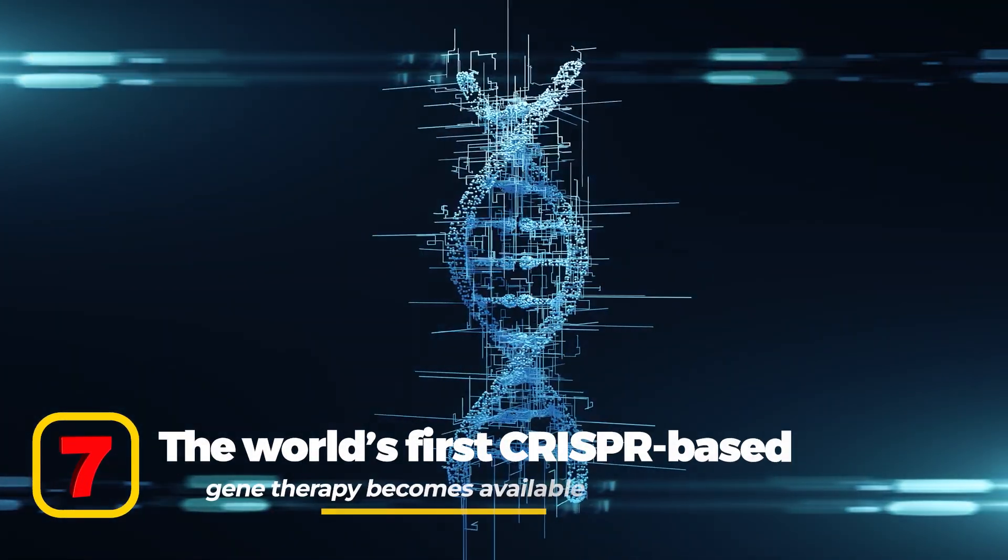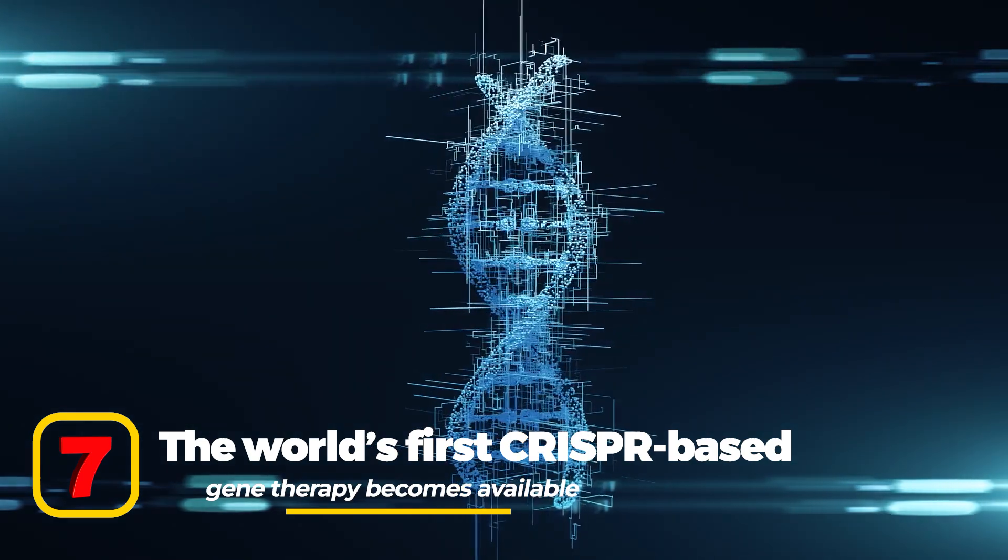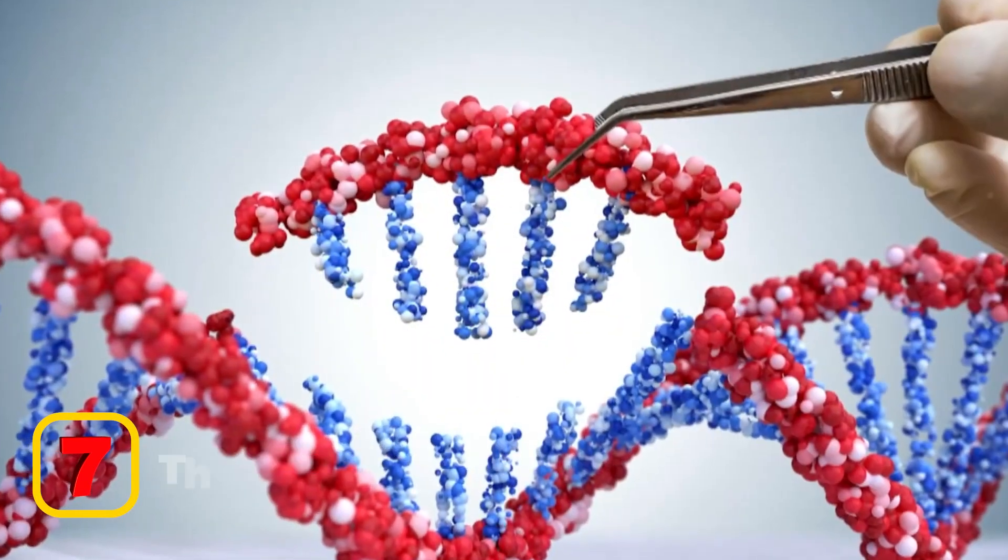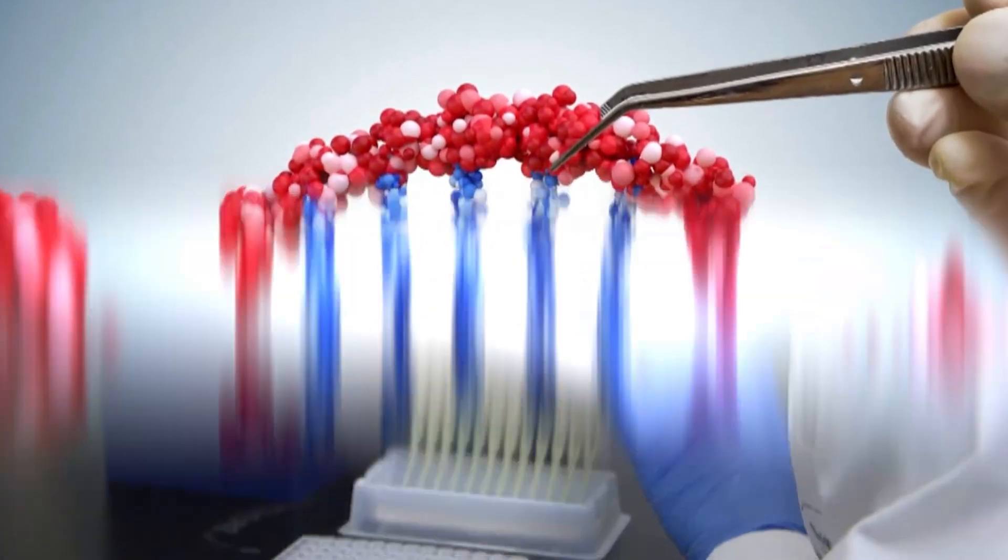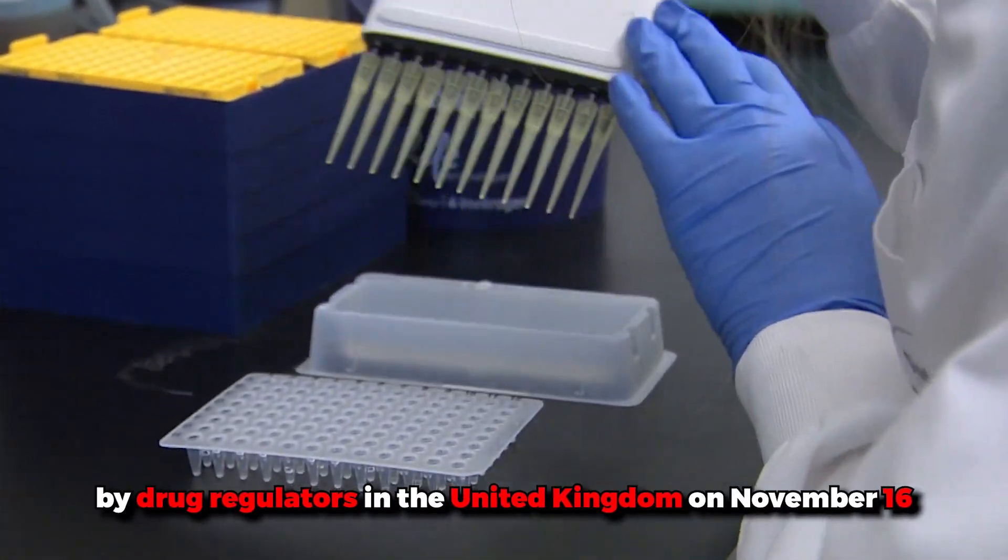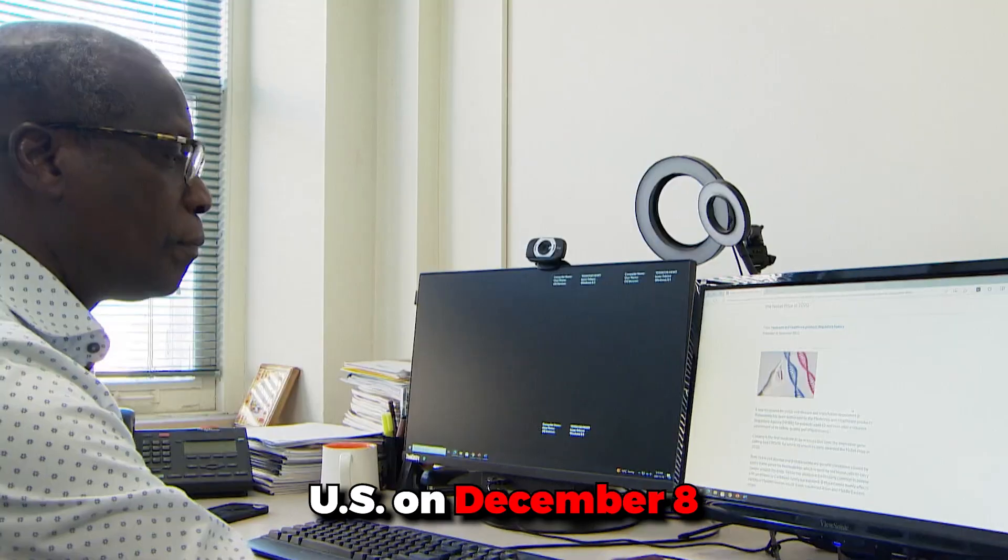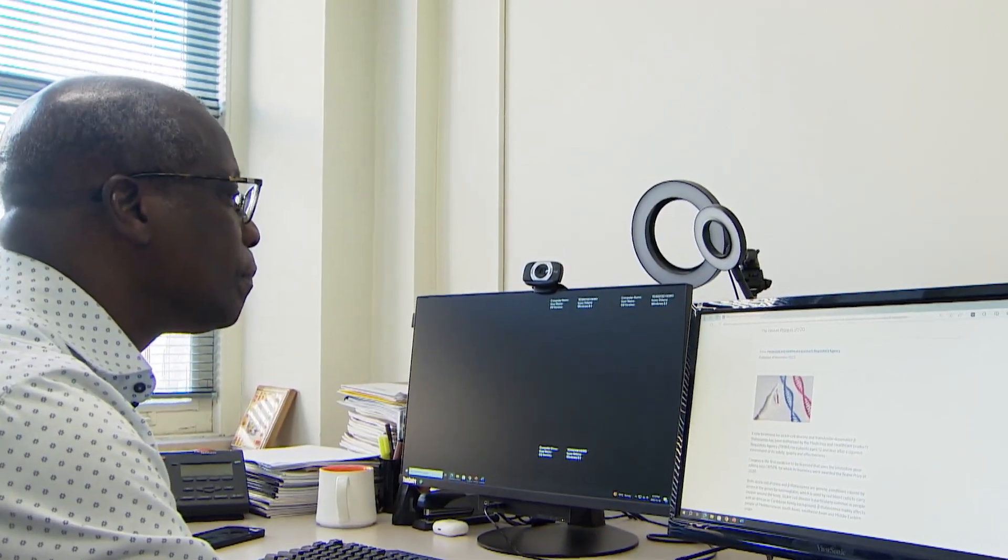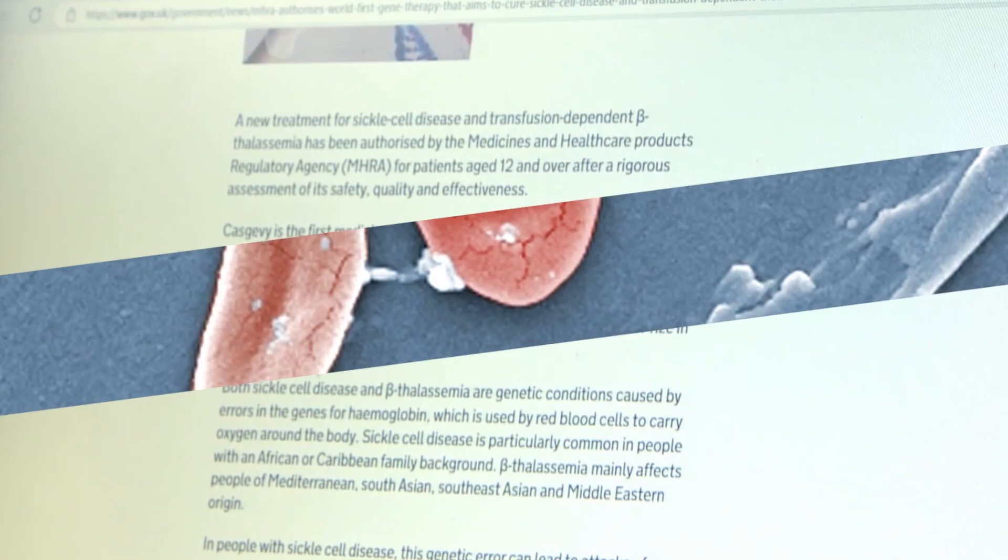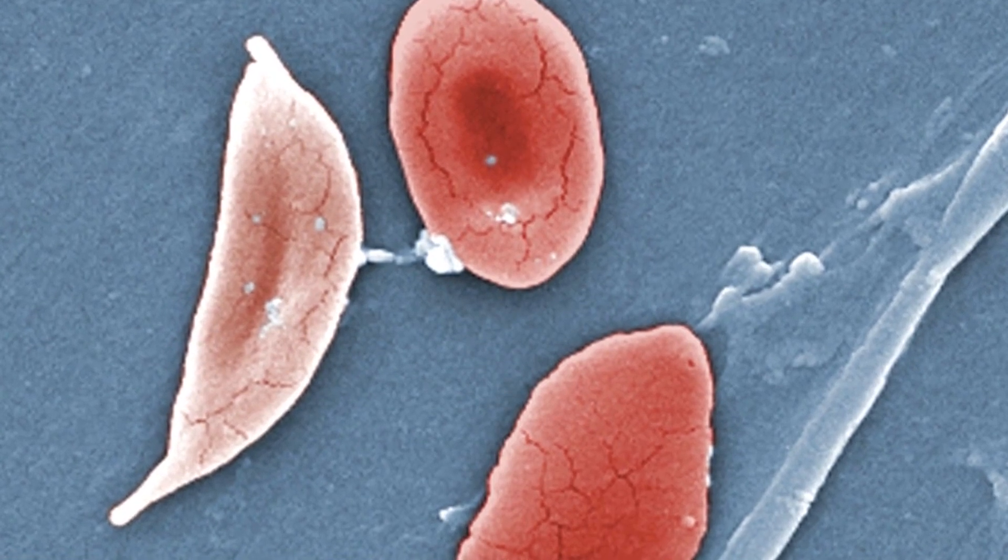Number 7: The world's first CRISPR-based gene therapy becomes available. The world's first CRISPR-based gene therapy was approved by drug regulators in the United Kingdom on November 16th and the U.S. on December 8th. It treats sickle cell disease and beta-thalassemia, genetic disorders that affect the red blood cells.